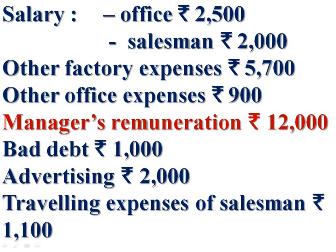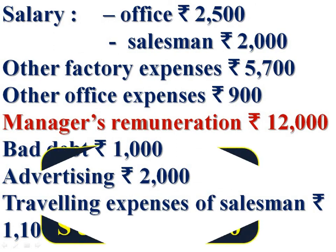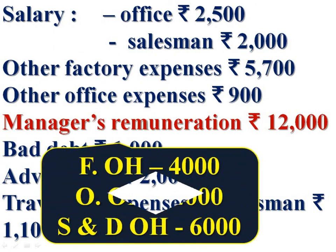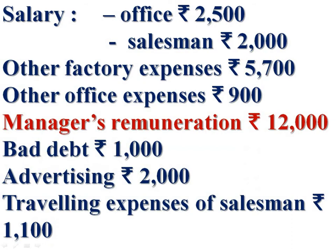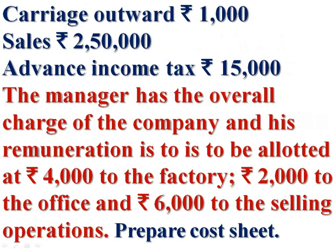Manager's remuneration is Rs 12,000 in total. It is allocated as follows: Rs 4,000 is allowed to the factory as factory overhead, Rs 2,000 to office as office overhead, and Rs 6,000 to selling and distribution overhead, because we are given that Rs 4,000 is allowed to the factory, Rs 2,000 to office, and Rs 6,000 to selling.